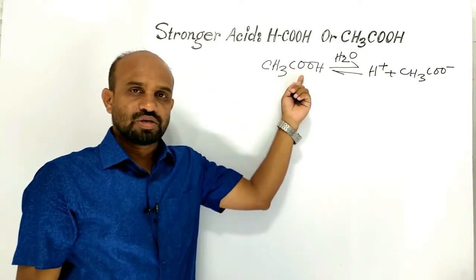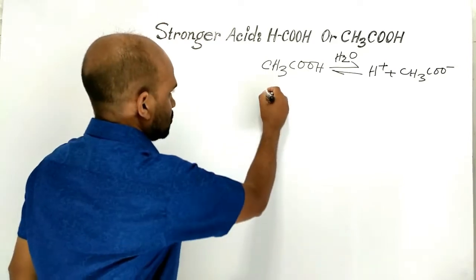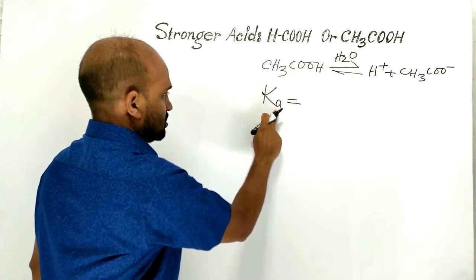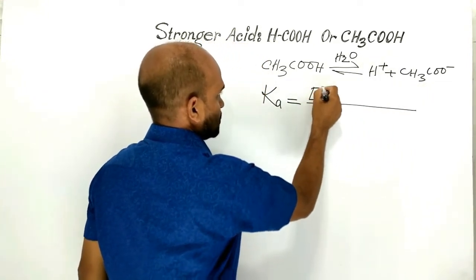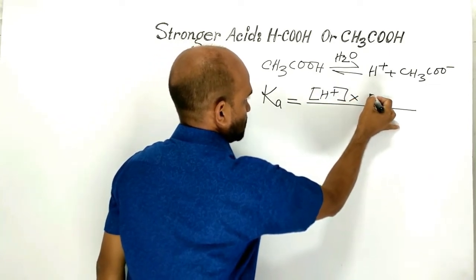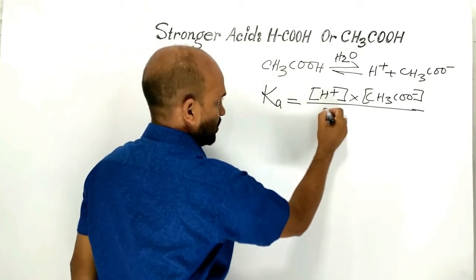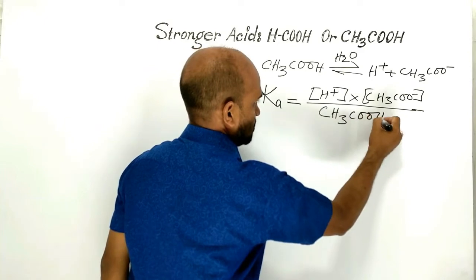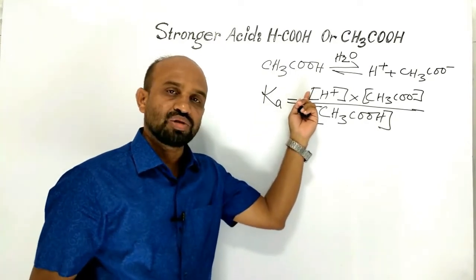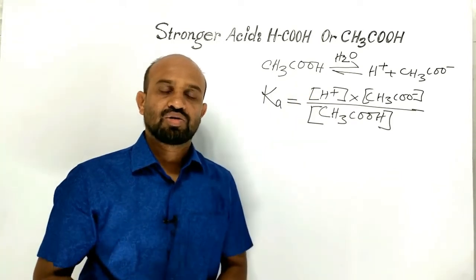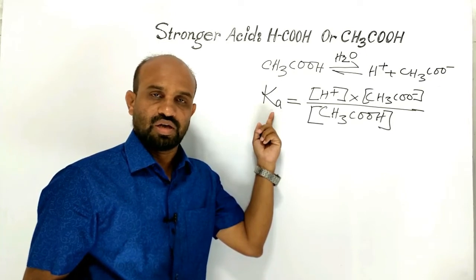Acetic acid is a weak acid, that is why a reversible reaction arrow is used. According to the law of mass action, we can write the acid dissociation constant Ka as equal to the concentration of hydrogen ion times concentration of acetate ion divided by concentration of unionized acetic acid. The more the ionization, the more the value of Ka.